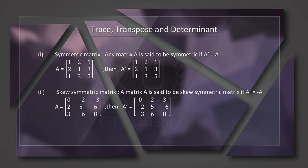Now, we will discuss two special types: the symmetric matrix and the skew symmetric matrix. A matrix A is said to be symmetric if A-transpose is equal to A. For example, the matrix A is equal to [1, 2, 1; 2, 1, 3; 1, 3, 5].